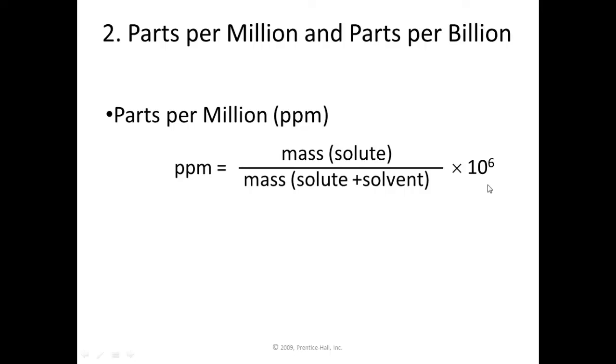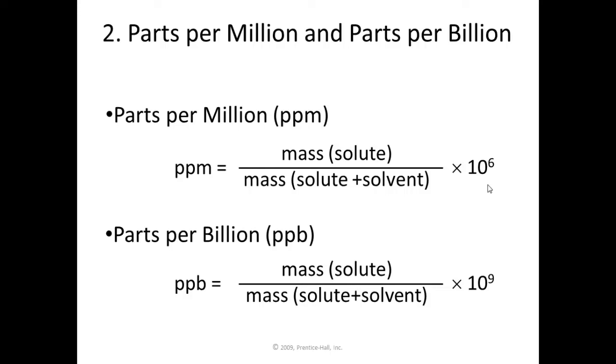And so similarly, I'm sure you can imagine now that in a part per billion, you start with the same mass ratio, but you multiply it by a factor of a billion. And so you would use parts per billion, you're just taking that mass ratio and you're multiplying it by a bigger number if that ratio is even smaller, and needs to be amplified by a larger number to bring it into the range that the number itself is easy to write down and work with.